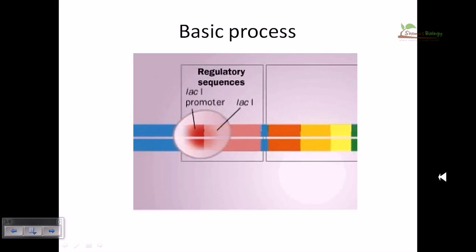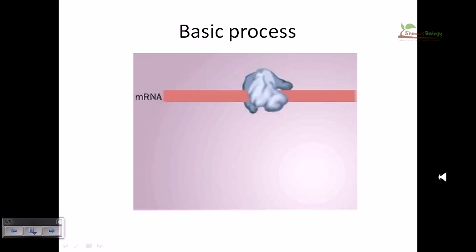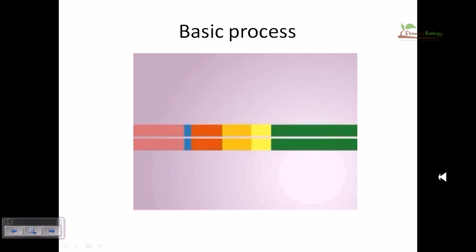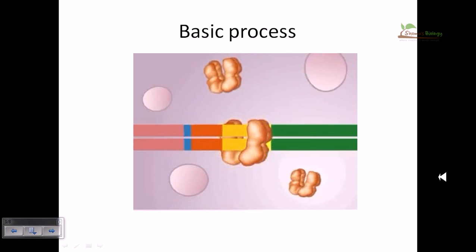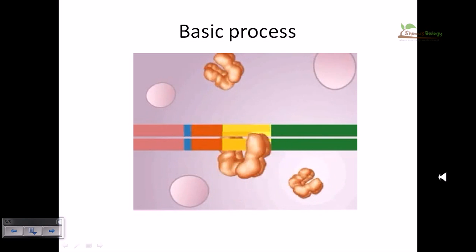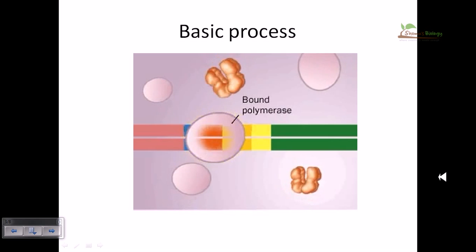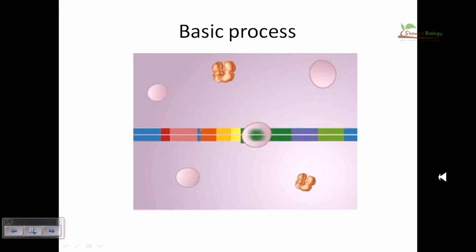Upstream from the lac operon is a regulatory gene, lac I, which encodes a repressor protein. The repressor tetramer is slowly but continuously produced by the cell. The operator overlaps the promoter. If a repressor molecule is present, it can bind the lac operator — it doesn't stick like glue but continually binds and releases, so the operator is not bound by the repressor at all times and the structural genes are transcribed at low, or basal, levels.